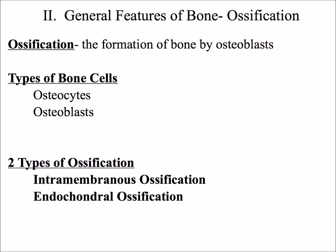Endochondral ossification is the second mechanism for making bones. Endo means inside. Chondral refers to cartilage. So endochondral ossification is the process of making bone within cartilage.